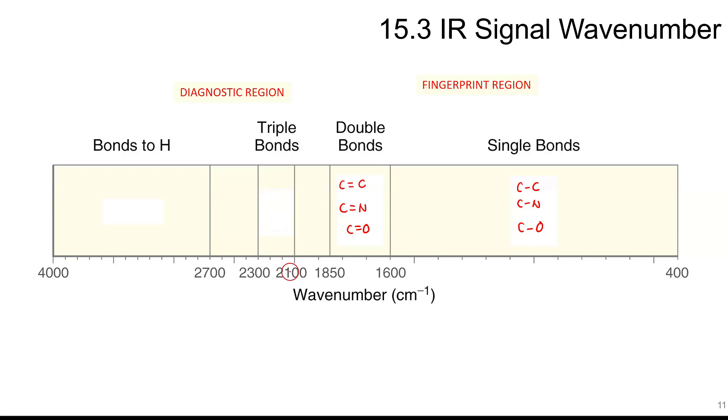If there's any molecules with the triple bonds, those tend to show up between 2100 to 2300. And then the bonds to hydrogen show up above 2700. So that's XH. Here, X can equal an OH hydrogen, an NH, or a CH.